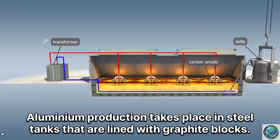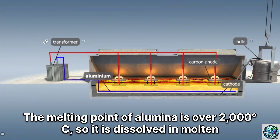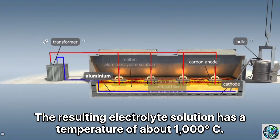Aluminium production takes place in steel tanks that are lined with graphite blocks. This graphite lining functions as the cathode. The melting point of alumina is over 2,000 degrees Celsius, so it is dissolved in molten cryolite, which has a lower melting point. The resulting electrolyte solution has a temperature of about 1,000 degrees Celsius.